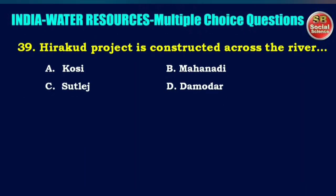Hirakud project is constructed across the river — options are Kosi, Mahanadi, Sutlej, or Damodar. The right answer is option B: Mahanadi.